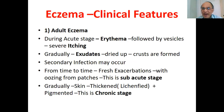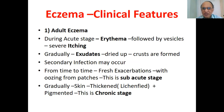In acute eczema, there will be redness — erythema — followed by vesicles with severe itching. Gradually, exudates or secretions come up, get dried, and crusts are formed. Secondary infection may occur. From time to time there are fresh exacerbations with oozing from the patches — this is called the sub-acute stage. Gradually the skin becomes thickened and lichenified, with pigmentation, and this is called chronic eczema.